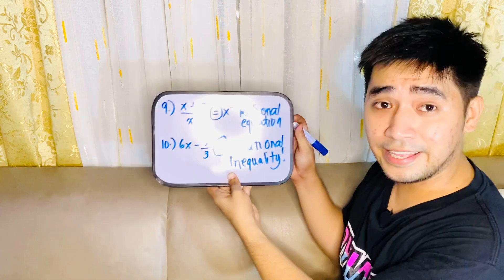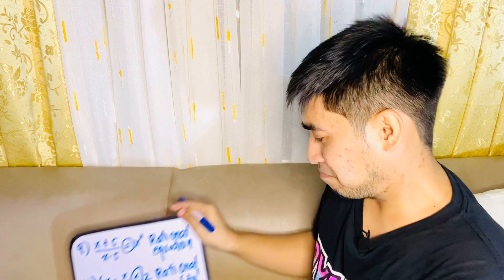And that ends the activity for today. I will just repeat what we have discussed. We are able to define rational expression, rational equation, rational inequality, and rational function, and we were able to differentiate each from one another. When we say rational expression, this is just an expression — a ratio, a fraction with a numerator and a denominator. Ibig sabihin walang equal sign, walang y, walang inequality na ginamit.